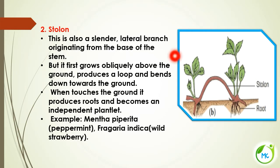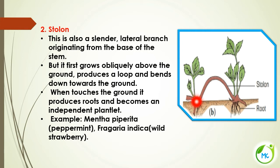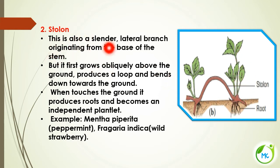The next kind of subaerial stem modification is stolon. It is a slender lateral branch originating from the base of the stem. It first grows obliquely above the ground, producing a loop-like structure, then bends down towards the ground. When it touches the ground, it produces roots and develops into an independent plant. Examples are Mentha piperita (peppermint) and Fragaria indica (wild strawberry).